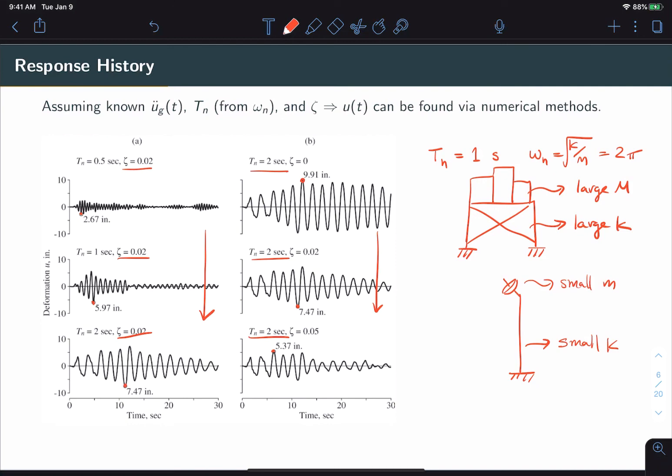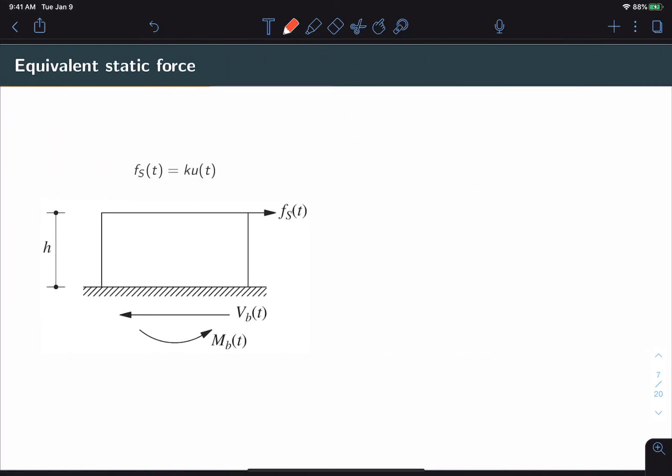Now you will notice that we chose to focus on maximum displacement here and that is because of the idea of equivalent static force which is expressed by the equation here. Equivalent static force F sub S is expressed as simply the stiffness of the structure times its displacement. This means that by extension we can express important design quantities such as base shear and overturning moment also in terms of displacement itself. And since we usually care about the maximum of these values then really all we need to know is maximum u. This is why the maximum displacement u max is such a useful quantity to extract from the response time history.